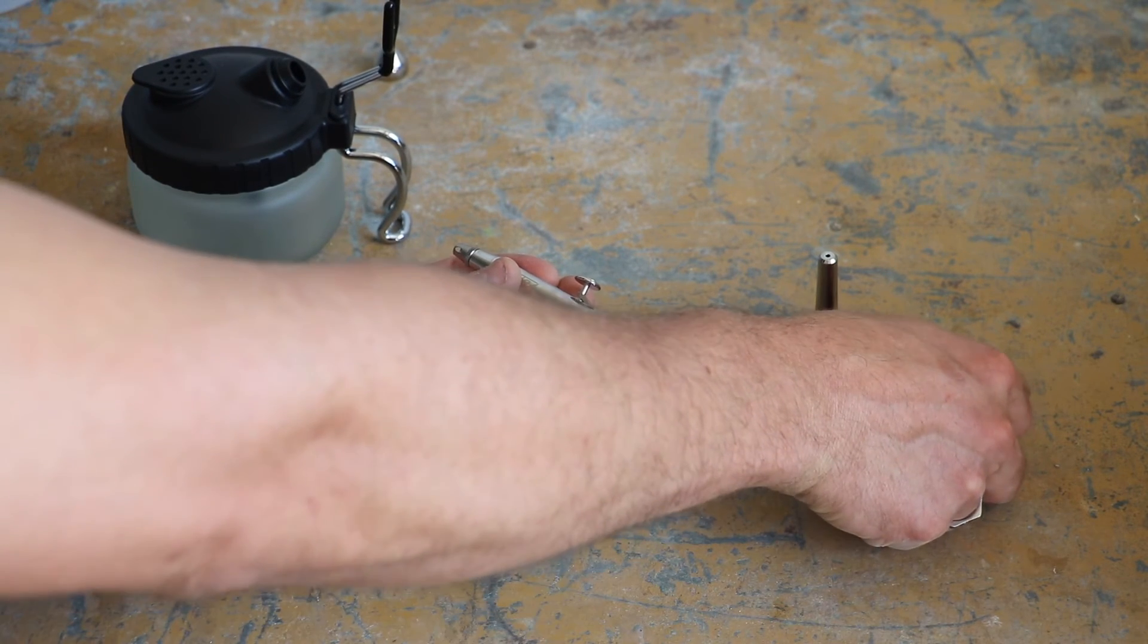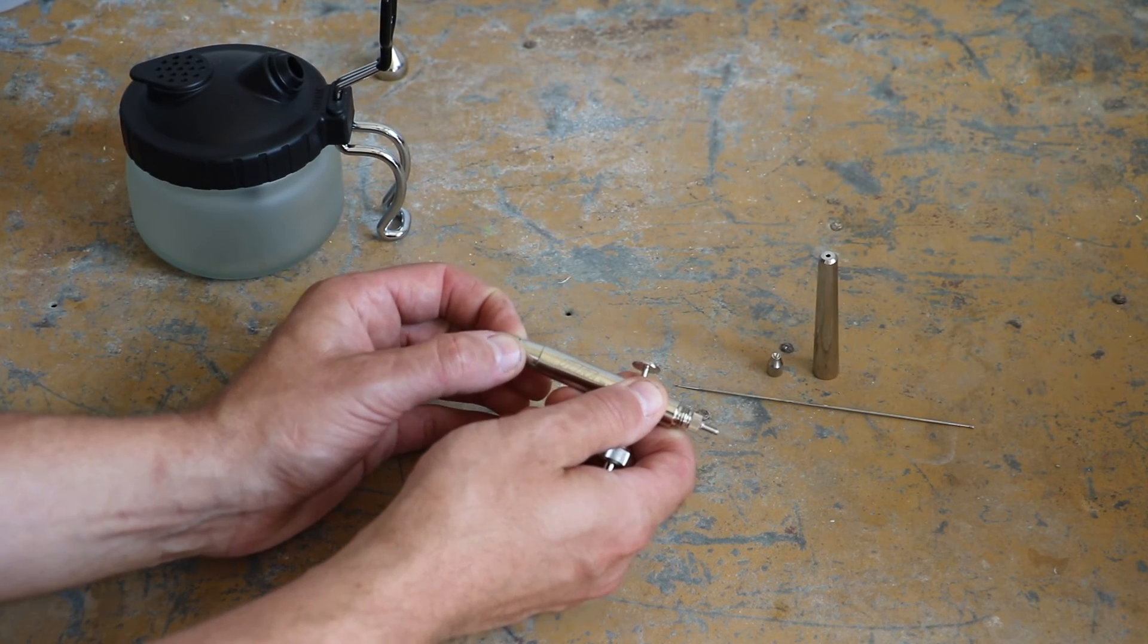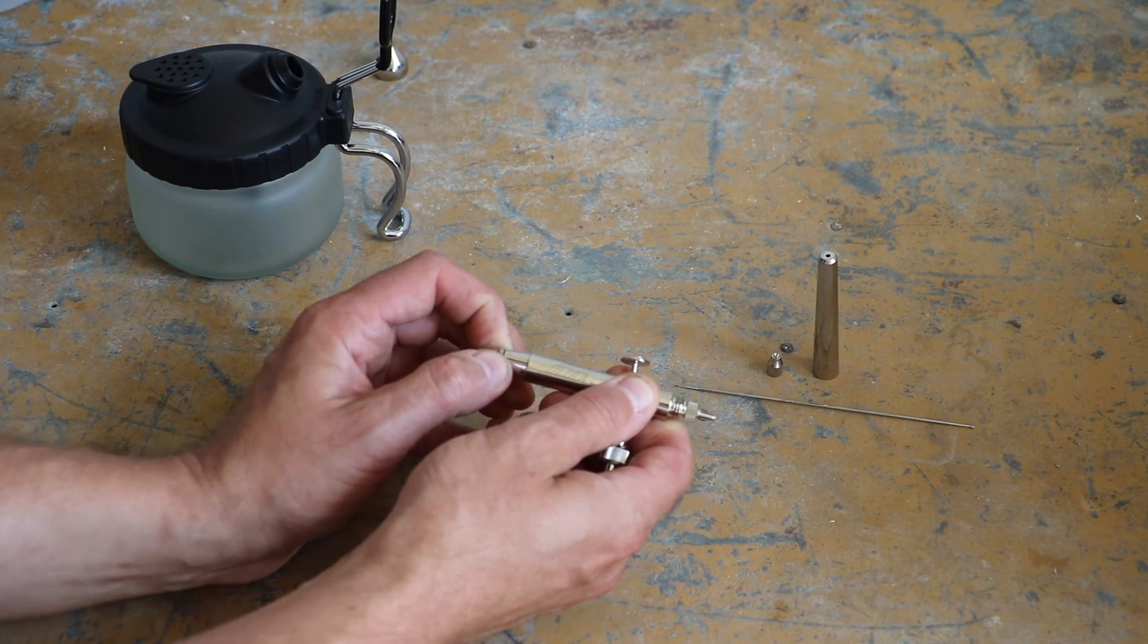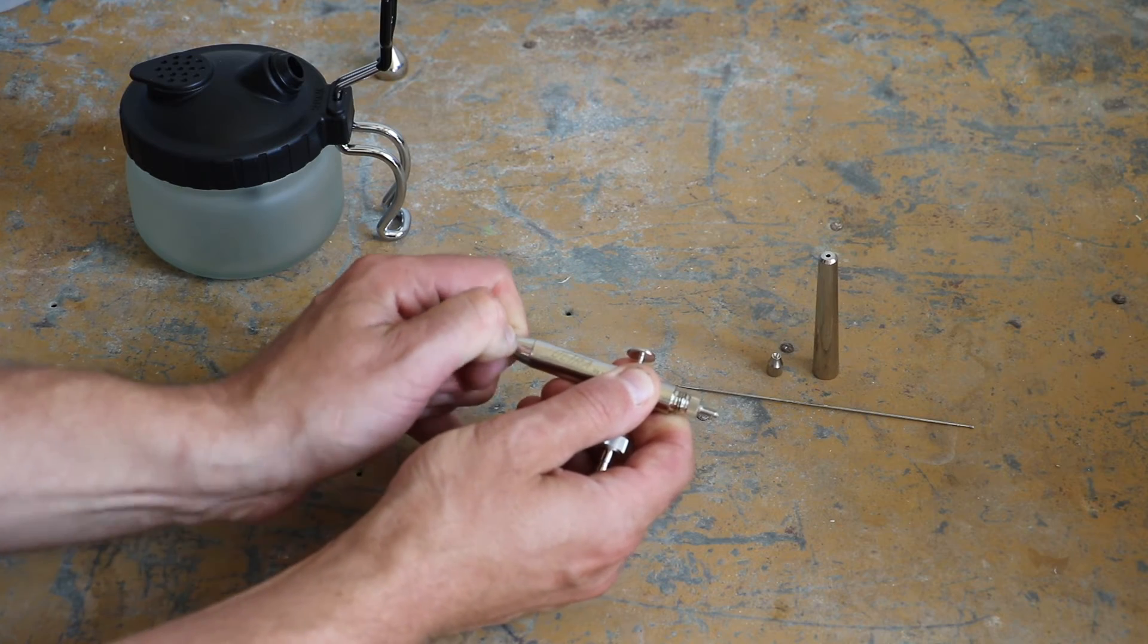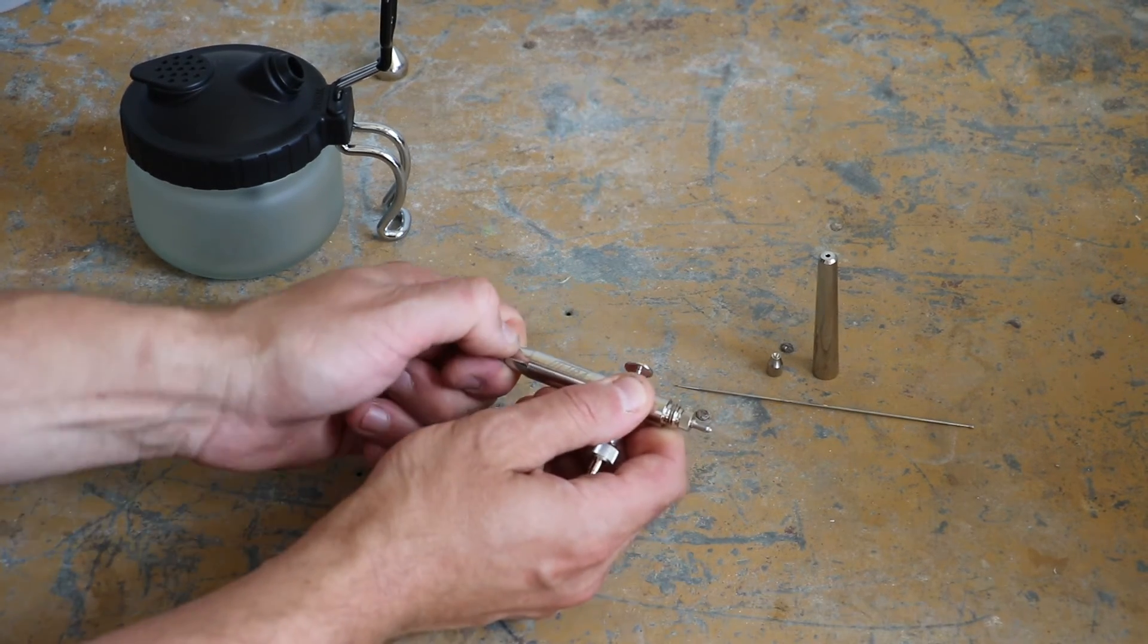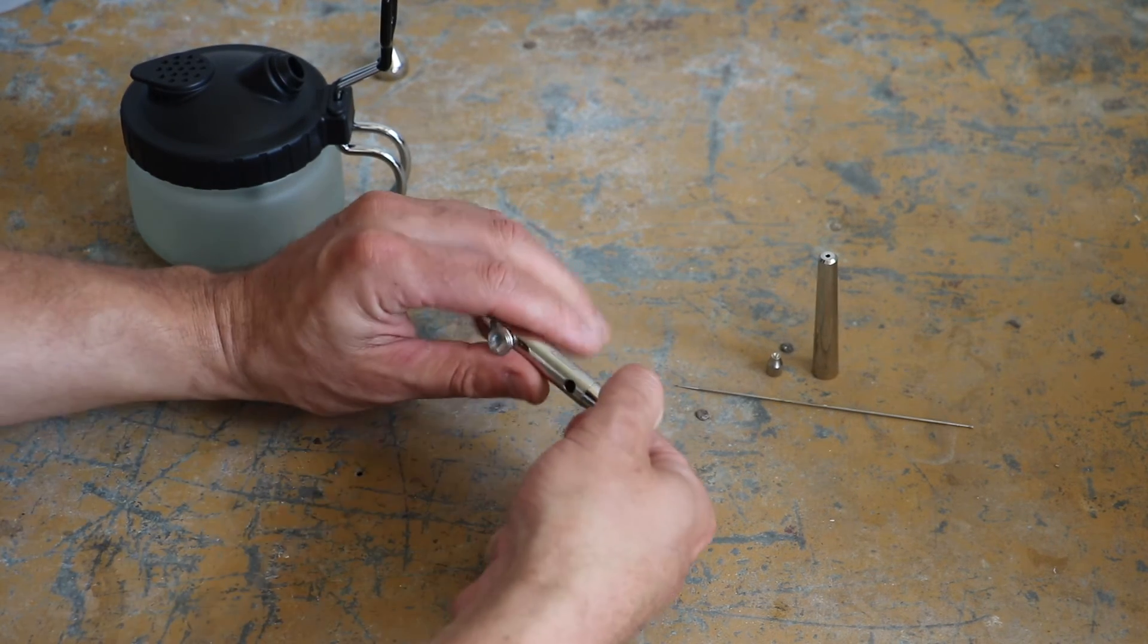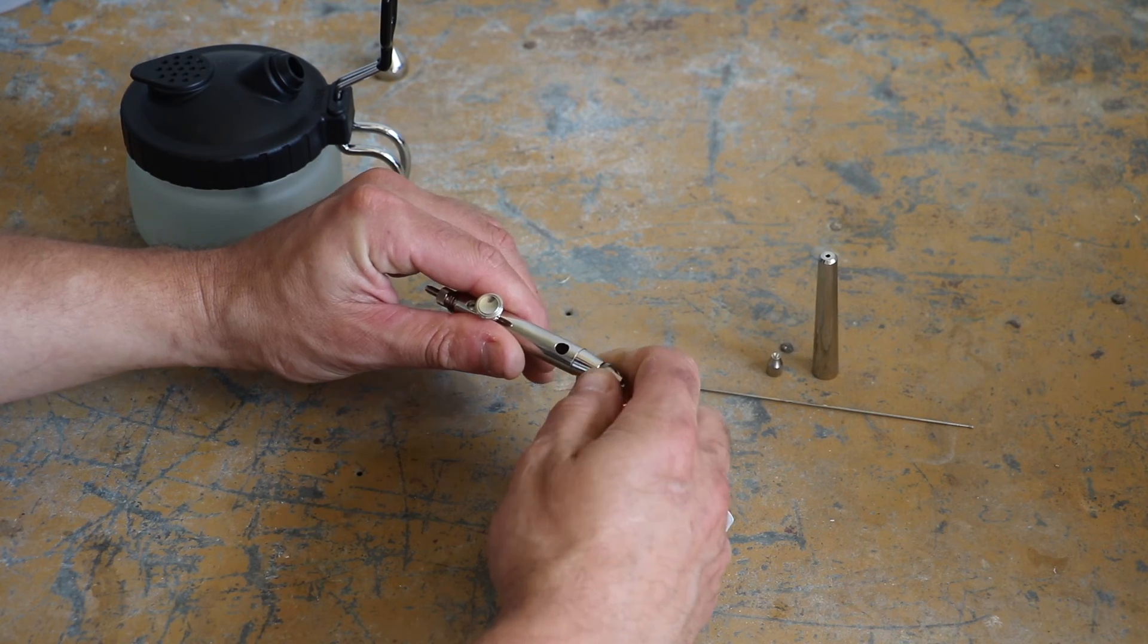So we'll take the needle out and we'll just pop that down there just for now there we are. So to take the front off you want to undo that little bevel there again it should be finger tight. It doesn't want to come off I may need to do that off camera so I don't want to break it.